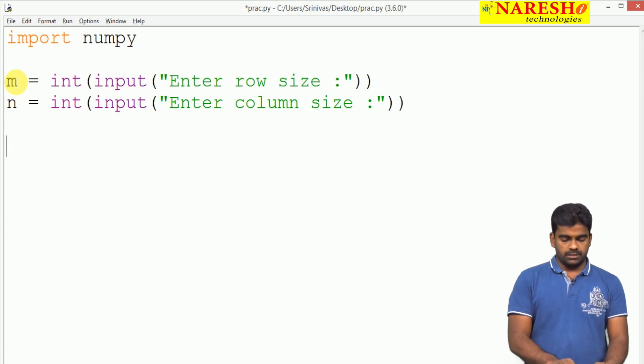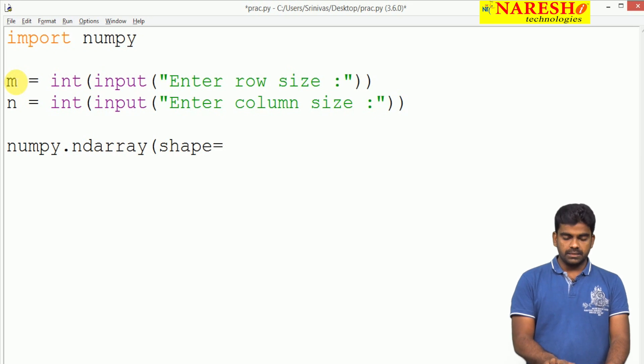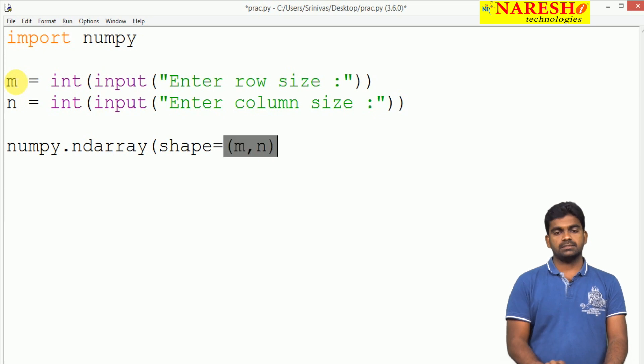Now we are constructing using the NumPy module's ndarray function. Here we need to specify the shape in a tuple as m comma n.